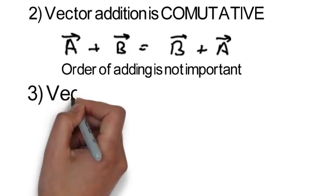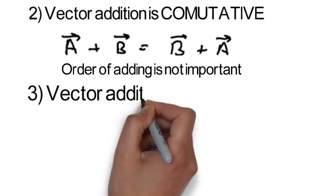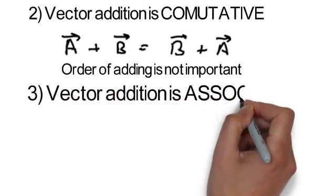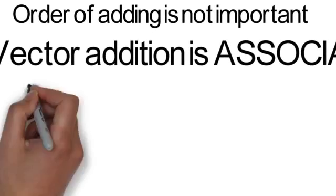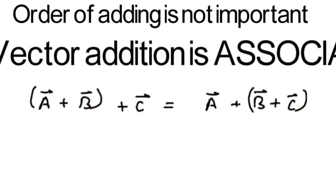Third, vector addition is associative. It means (vector a plus vector b) plus vector c will be equal to vector a plus (vector b plus vector c).